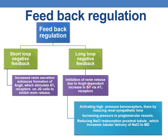In long-loop negative feedback, inhibition of renin release occurs due to angiotensin 2–dependent increase in blood pressure, also mediated by AT1 receptors. This increase in blood pressure inhibits renin release mainly by activating high-pressure baroreceptors, thereby reducing renal sympathetic tone, by increasing pressure in preglomerular vessels, and by reducing NaCl reabsorption from the proximal tubule, which increases tubular delivery of NaCl to the macula densa.